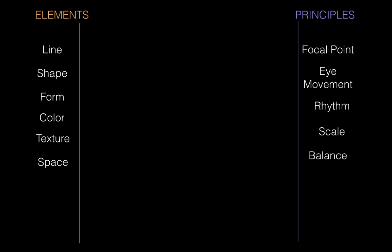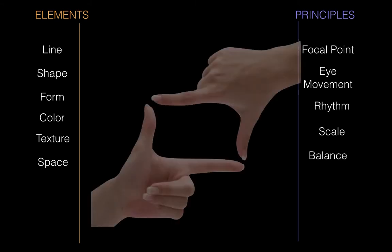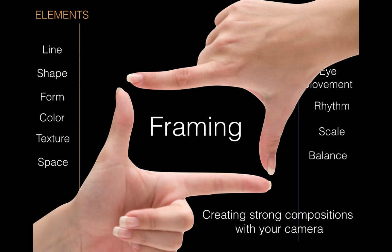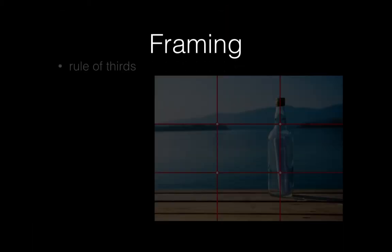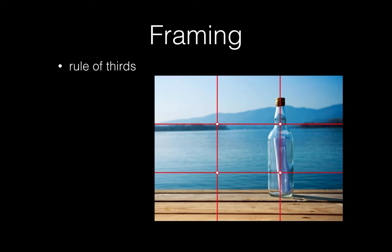So now we have the elements and principles of design. What we're going to look at next is how you can apply these to create a good image. There are a few more tricks here, including framing. You can have all of the best elements and principles used very well, but if you've framed your image wrong, you'll still end up subverting everything you just tried to do. Framing is about creating strong compositions with your camera — deciding what's in and what's out. One trick that's really useful for framing is the rule of thirds: if you divide your image into thirds so there are three chunks going across and three going vertically, the intersections and the lines themselves are really great places for objects to land. Things tend to look more comfortable and balanced if objects coincide with those lines or nodes.